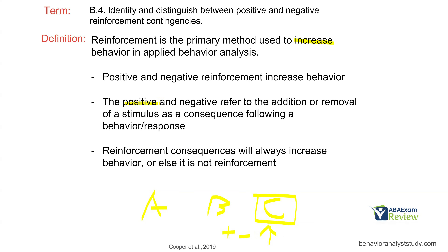Then we think about positive and negative. Traditionally, negative reinforcement is thought of as a bad thing. But in behavior analysis and behavior science, negative just means the removal. Positive means something is added; negative means something is taken away — the addition or removal of a stimulus as a consequence following a behavior or response. Reinforcement consequences will always increase behavior, or else it is not reinforcement. If the behavior doesn't change or decreases, we are not looking at reinforcement.